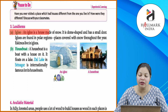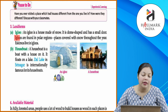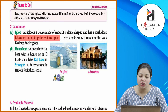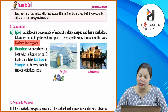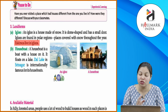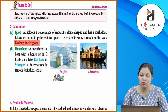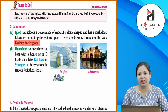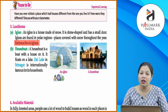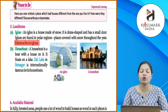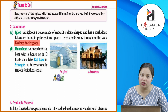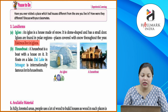Igloo: an igloo is a house made of snow. It is dome-shaped and has a small door. Igloos are found in polar regions — places covered with snow throughout the year. Jo Eskimos hote hain, wo igloos mein rehte hain. Ye igloos un areas mein paye jaate hain jahan pe zyada snowfall hoti hai, ya phir 12 months snow se covered rehte hain. Ye polar regions mein paye jaate hain.